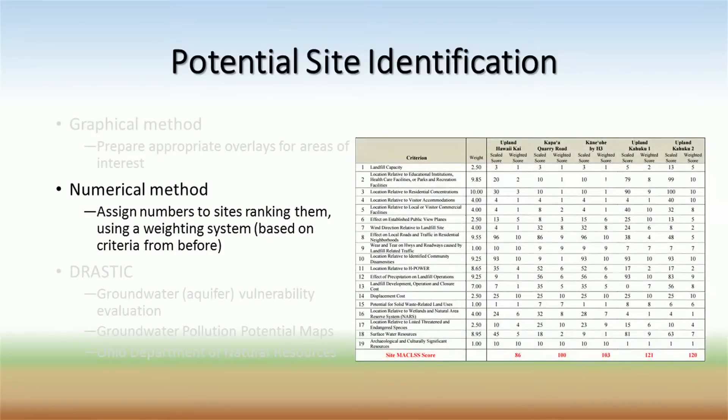Numerical methods go hand in hand with the other methods. Criteria defined previously is weighted based on the importance of the project, with higher weights given to the exclusionary criteria. Each site is then evaluated on these criteria and given an overall score. Sites with higher scores are given more attention while lower scored sites get discarded.